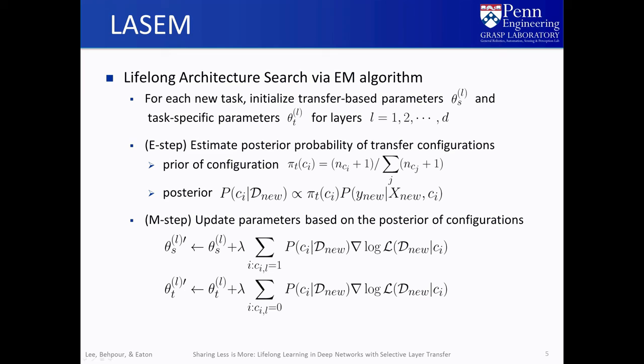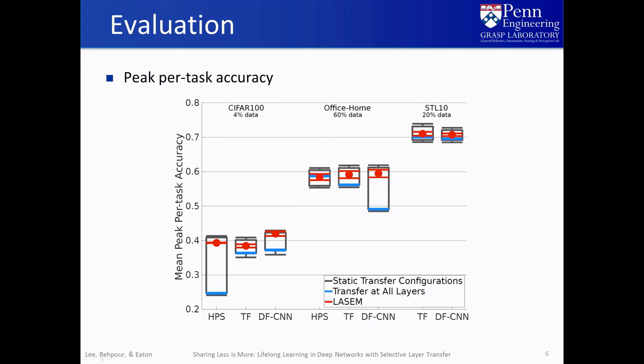We came up with the idea of using expectation maximization to combine learning of individual task models and the architecture search. Learning each new task starts by initializing the parameters of both the transfer-based and task-specific layers. Instead of maintaining a distinct set of parameters for each configuration, our method LASEM shares one set of parameters for all configurations to check. The training procedure iterates the E-step and M-step to estimate the fitness of a configuration for the task and optimize the network parameters.